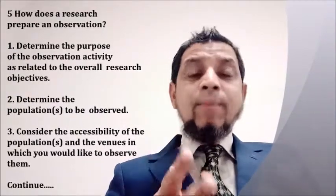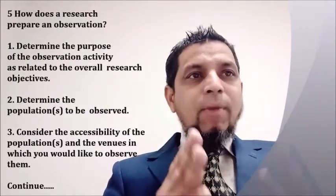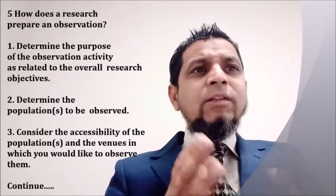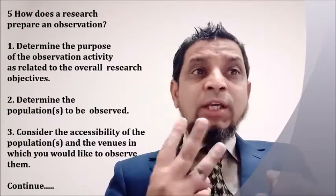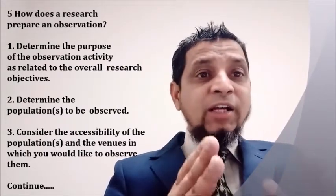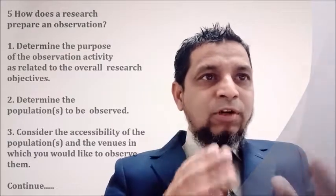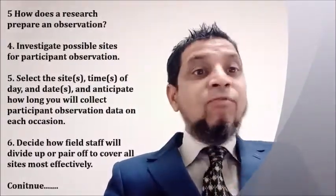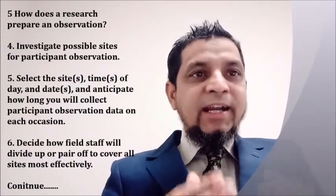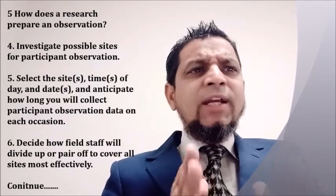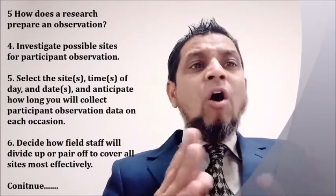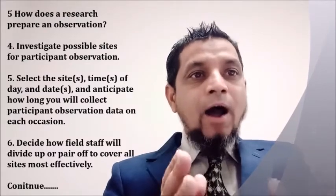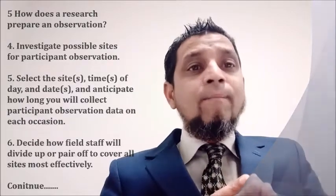Point number five: how does a researcher prepare an observation strategy? Steps: number one — determine the purpose of the observation as related to overall research objectives; number two — determine the population to be observed; number three — consider the accessibility of the population and venues; number four — investigate possible sites for participant observation; number five — select the site, time of day, and dates and anticipate how long you will collect data each session; number six — decide how field staff will divide up to cover all sites most effectively.